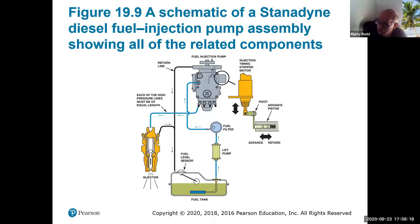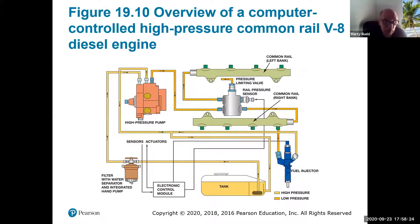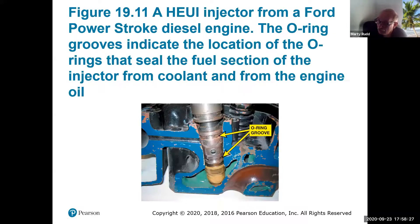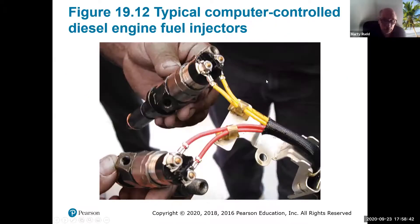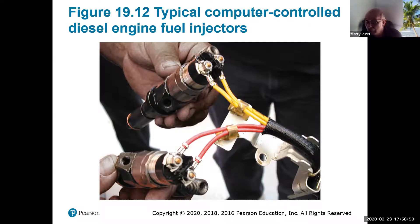I leave this in here for my diesel-type classes — it shows how some of these systems are actually laid out. This is an actual injector, showing the O-ring seals that go down inside the cavity. The injectors used to be mechanical, but now they're actually electrical, computerized injectors. They have to be indexed, and the computer needs to know what injectors are installed — that requires scan tools.